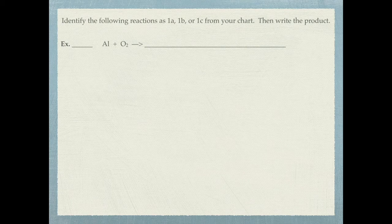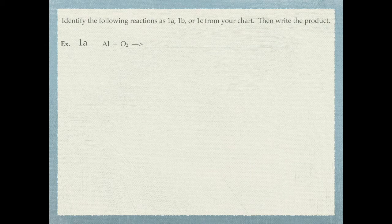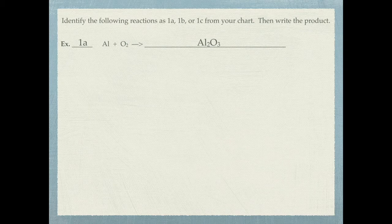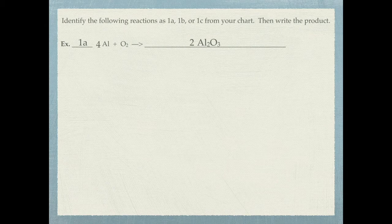The first practice reaction is aluminum plus oxygen. Aluminum is an element and oxygen is an element, so this is a 1A reaction. Aluminum has a plus three charge and oxygen has a minus two charge, so the formula is Al2O3. Since there are two oxygens on the reactant side and three oxygens on the product side, put a two in front of aluminum oxide to make six oxygens, then a four in front of aluminum and a three in front of oxygen. Now it's balanced.